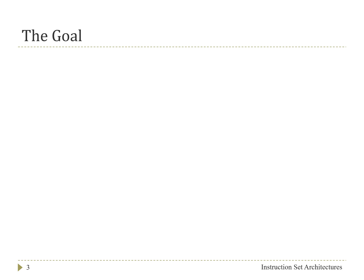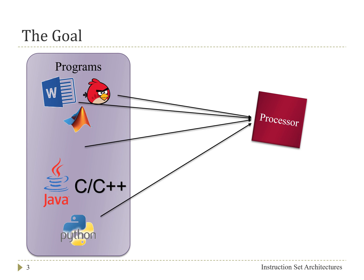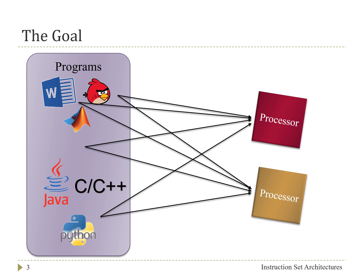Our general goal is to have a set of programs — these can be different applications written in different languages — and we'd like to be able to take these programs and execute all of them on a particular processor. Not only would we like to execute them on one processor, we'd also like to execute the same programs with very little if any modification on a different processor.